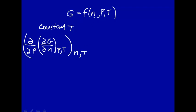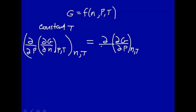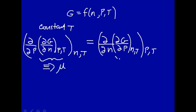We have two things to hold constant because g is a function of three variables. So let's reverse the order — g is a state function, so we can reverse the order. This would be how g changes with pressure at constant number of moles and temperature, and then take the derivative of that with respect to number of moles at constant pressure and temperature. This we've defined as the chemical potential. And how g changes with pressure at constant n and T is volume — the conjugate variable that goes with pressure.